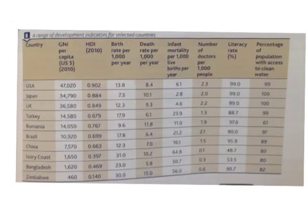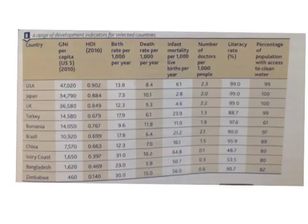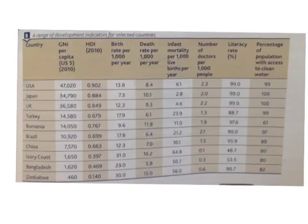Looking at the poorer countries, the GNI is much lower, the HDI is lower, and the birth rate tends to be higher. The death rate is not much different, to be honest, because as a country develops, the death rate drops first — as you may remember from the demographic transition model. The infant mortality rate shows that lots of children die very young. There are not many doctors, which obviously links to people dying young. Literacy rates in these two countries are around 50% — so around half the people can't read and write. Zimbabwe does have quite a high literacy percentage, but there is a lack of clean water, which links into all of these things around the number of children dying and death rates.